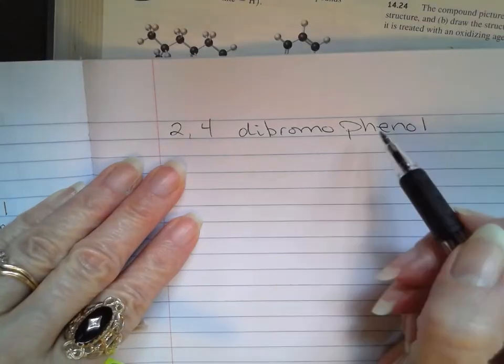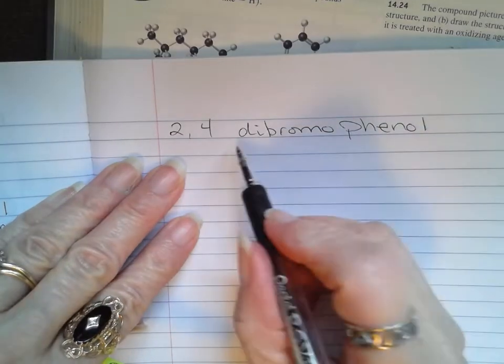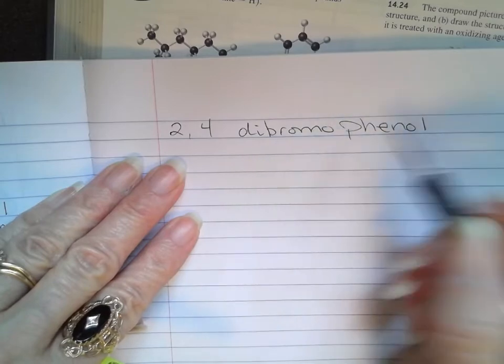All right, let's go from a name to a structure now. We're going to look at this 2,4-dibromophenol.